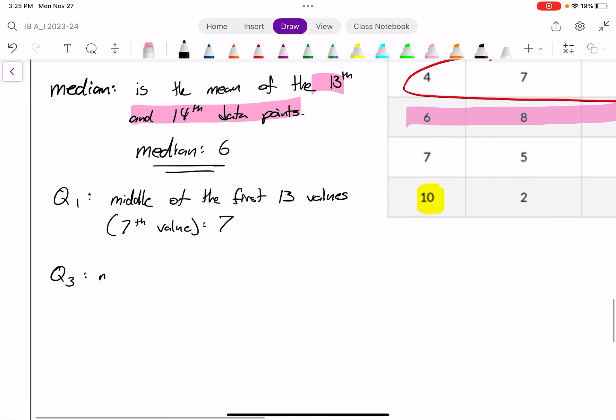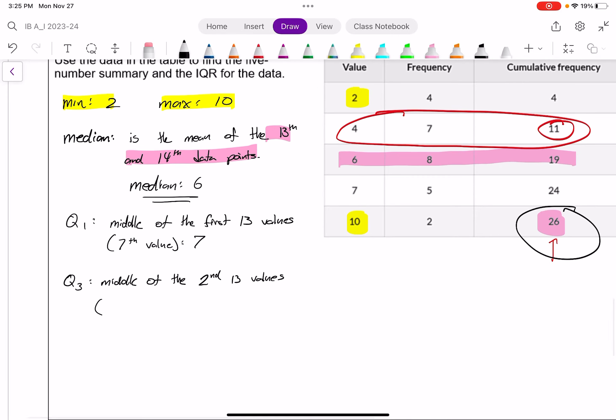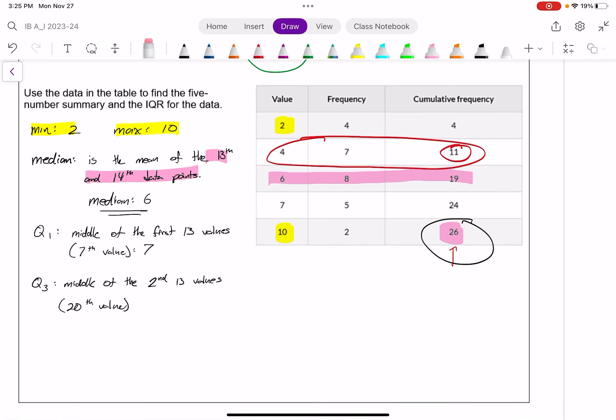And Q3 is the middle of the second half, middle of the second 13 values, which in this case is halfway between the 14th value and the 26th value. That is the 20th value. And I can tell by looking at my graph, the 20th value must be this very first seven that I've highlighted here. Because this row here represents five sevens listed out in a row. And just before we got there, we had 19 values in total. So the very next number must be a seven. That must be the 20th value. So the 20th value must be a seven.